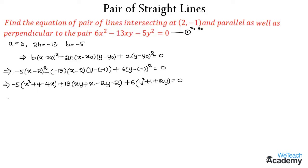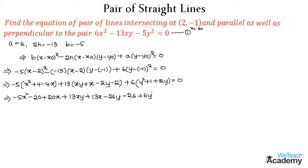Now let us multiply the terms: we get -5x² + 20 - 20x, then +13xy + 13x - 26y - 26, then +6y² + 6 + 12y = 0.